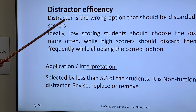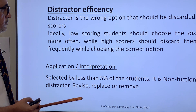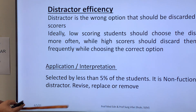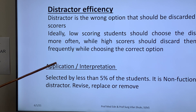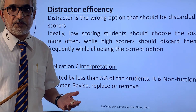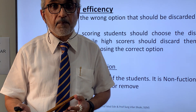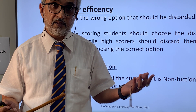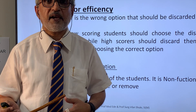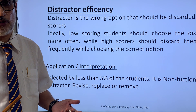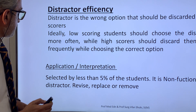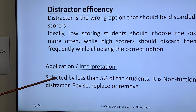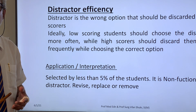Distractor efficiency: a distractor is the wrong option that should be discarded by higher scorers. Ideally, low-scoring students should choose the distractors more often, but higher scorers should discard them by choosing the correct option. Students with knowledge will not pick a distractor, whereas students who are not good will use the chance method and choose distractors as a correct answer. If a distractor is selected by less than 5% of students, it is a non-functional distractor and should be revised, replaced, or removed.